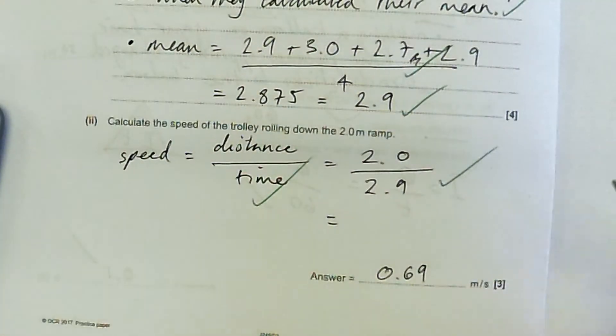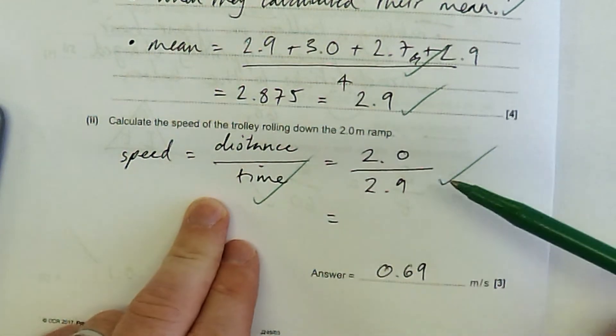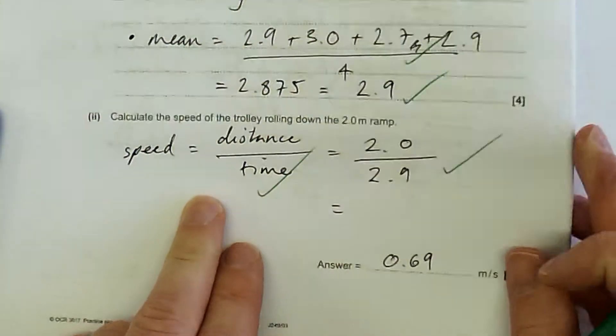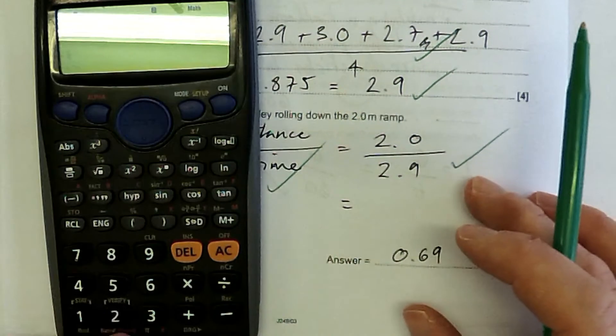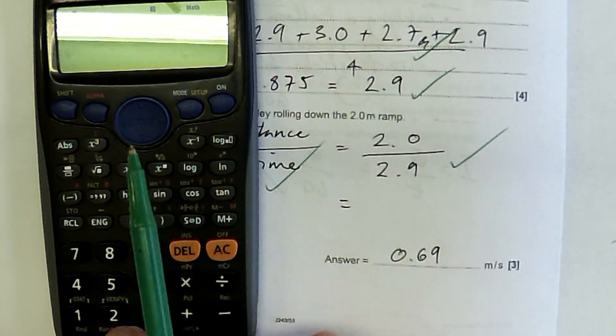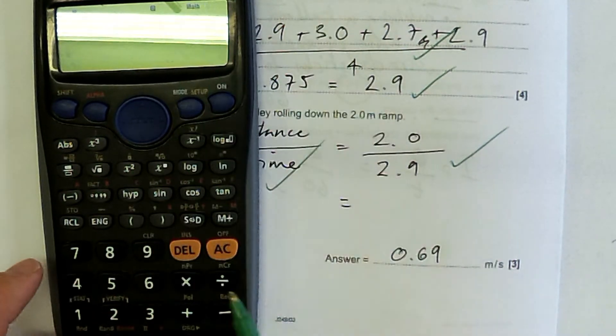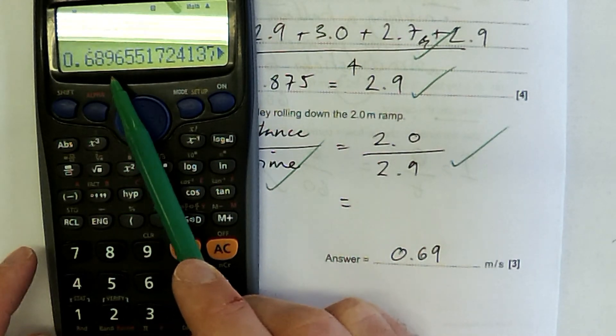Calculate then the speed of the trolley rolling down the two-meter ramp. So here we do need to memorize an equation, okay, this is our good old speed equals distance over time. Distance is 2 meters. Time, my average now is 2.9. 0.69 is my final answer.